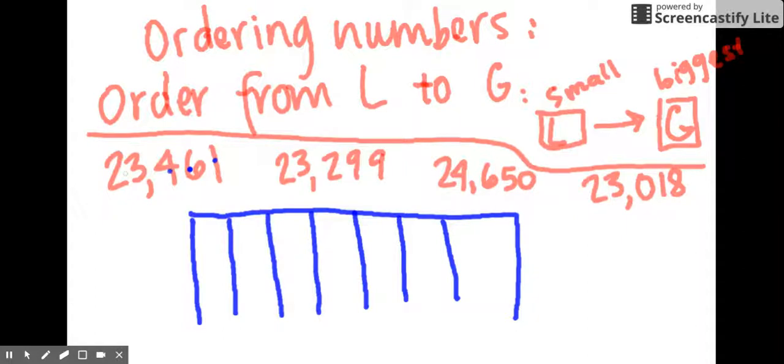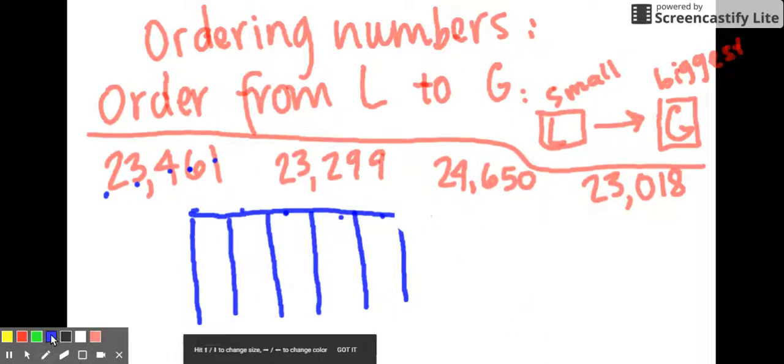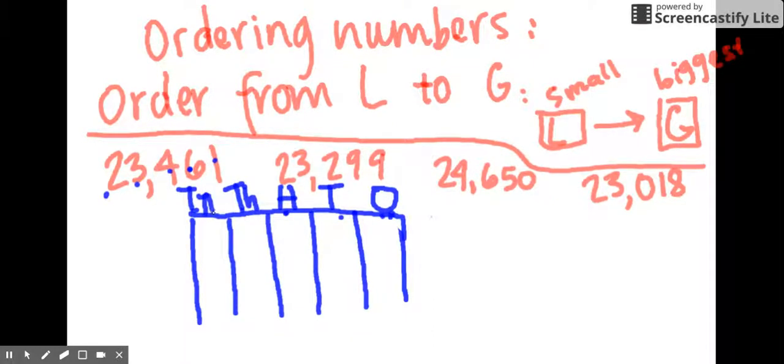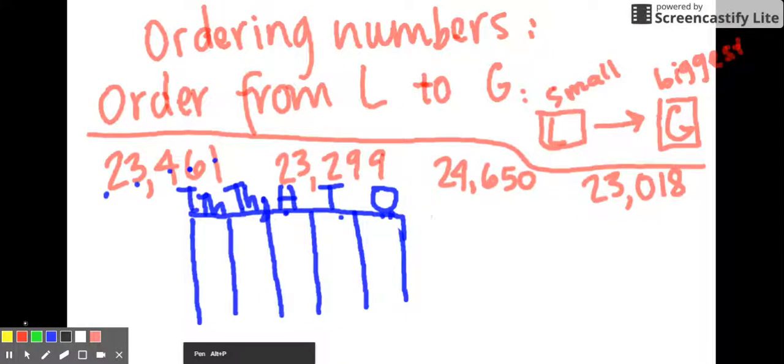We have ones, tens, hundreds, thousands, ten thousands. So I need one, two, three, four, five spaces. Here we go. Ones, tens, hundreds, thousands, ten thousands. I bet some of you said she forgot her comma. If you said that, you're awesome. Proud of you.